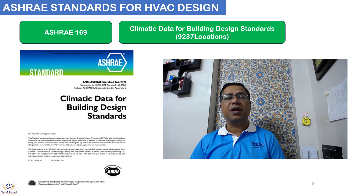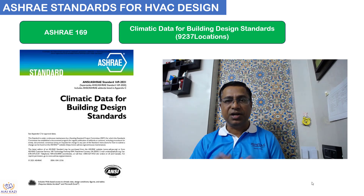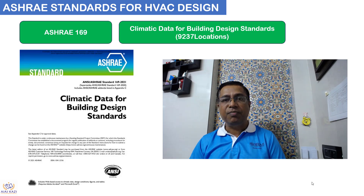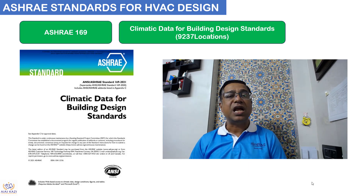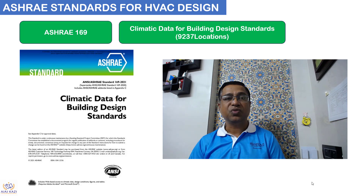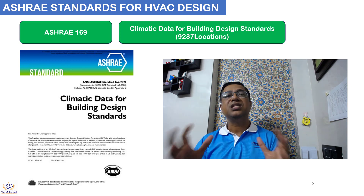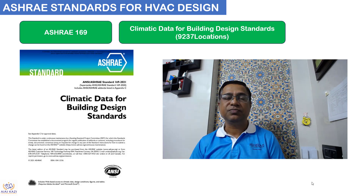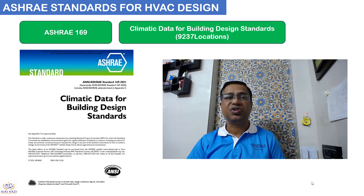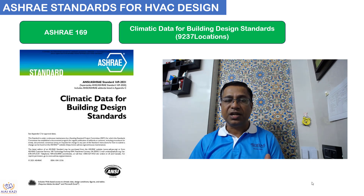The first is ASHRAE 169. This is the climatic data for building design standard. These data are available for 9,237 locations across the globe. These are the data on which the basis of design starts — you need to know what the outdoor conditions are, and this is captured in ASHRAE 169.